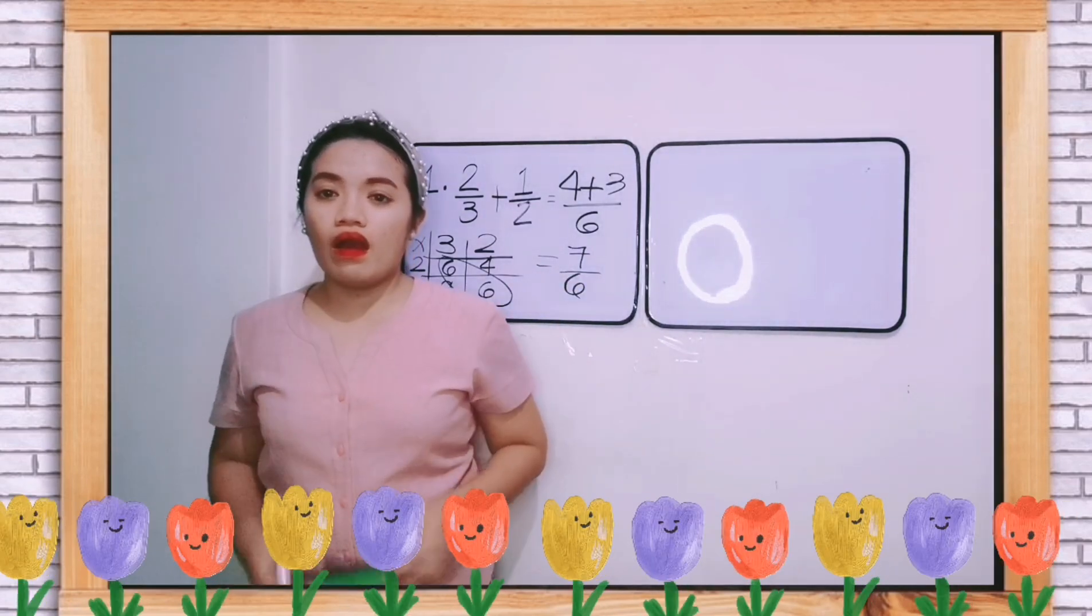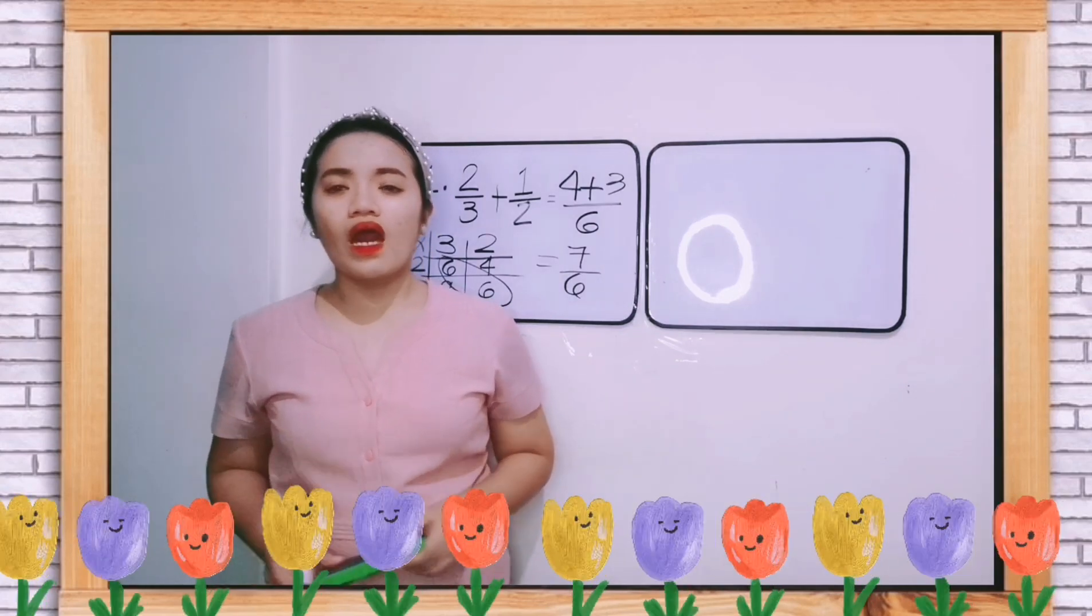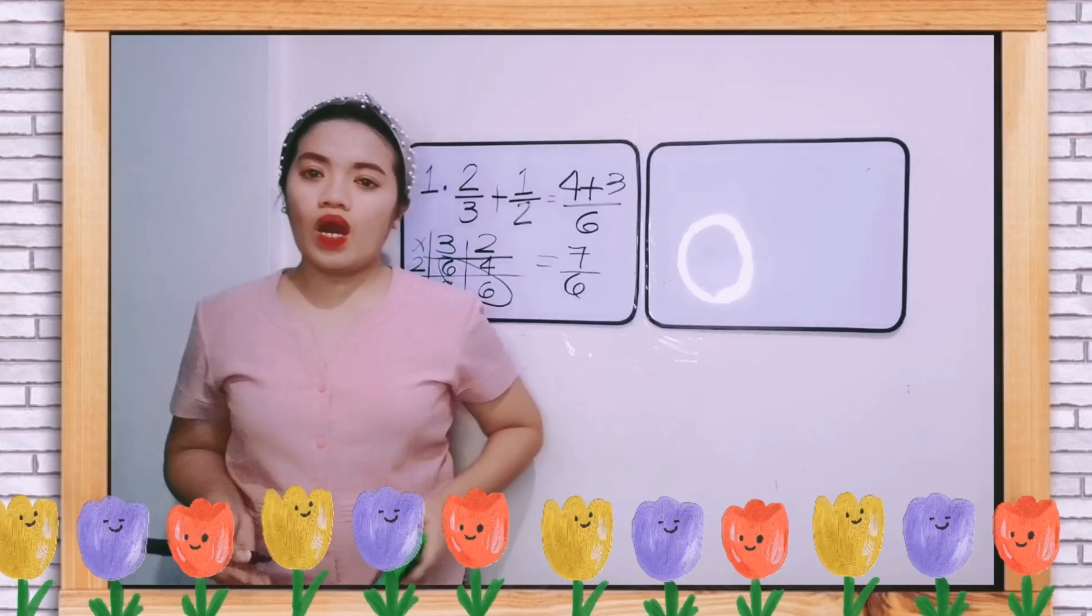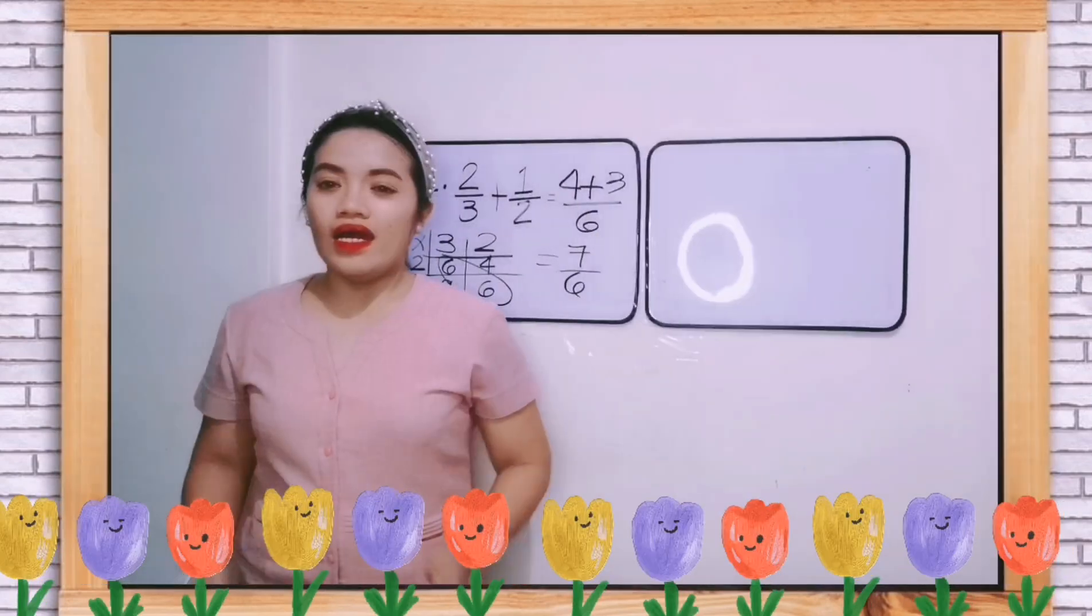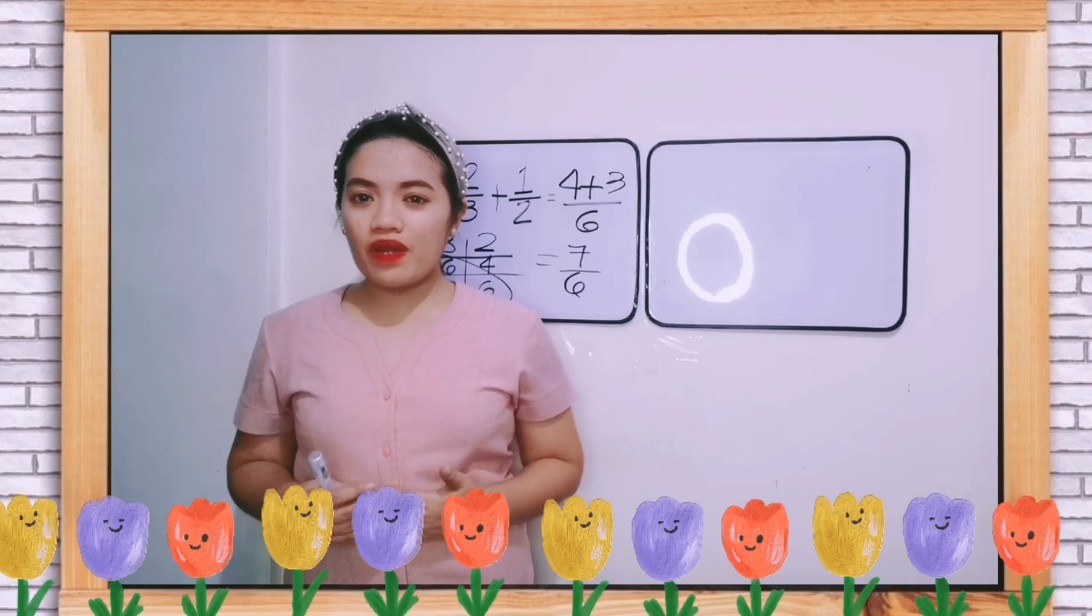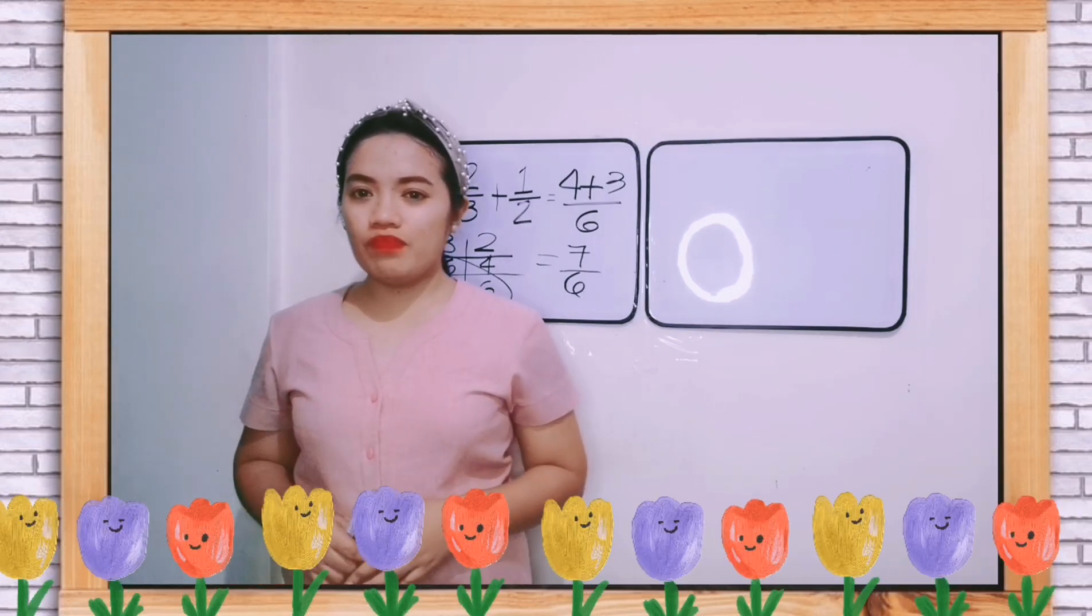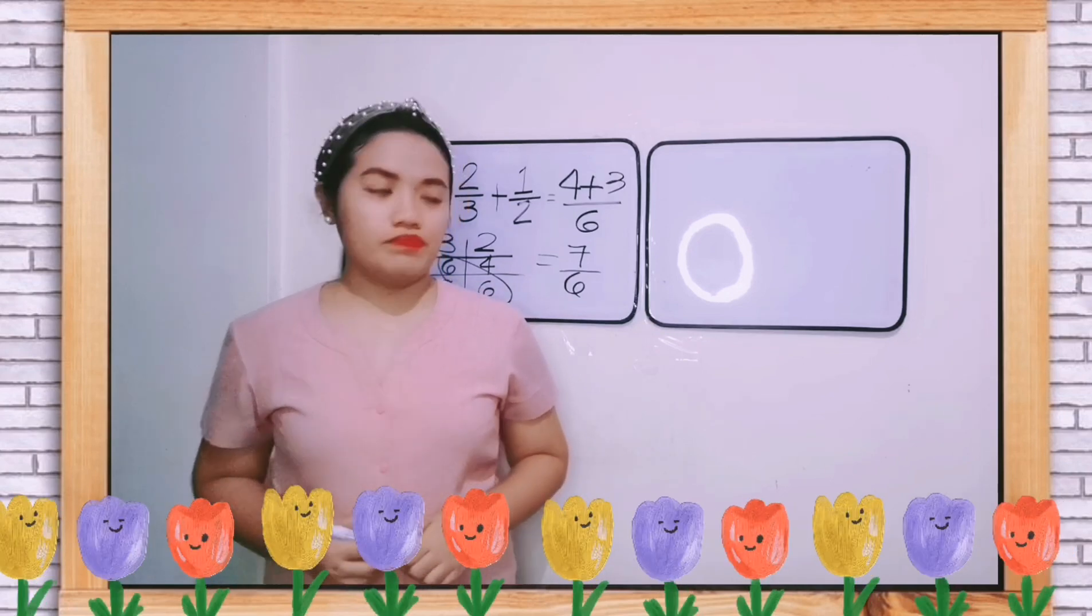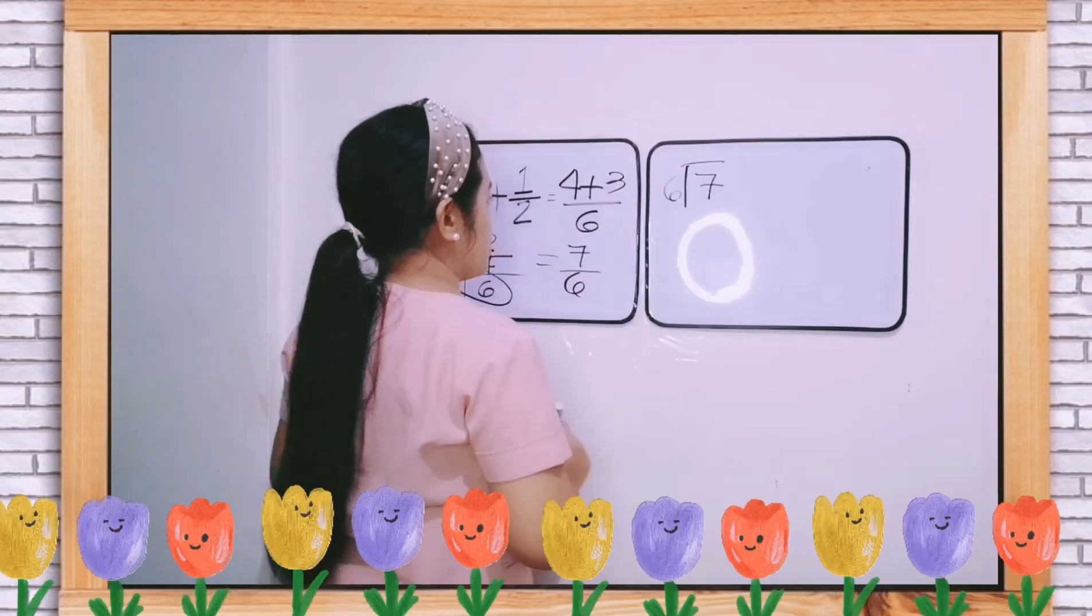As you can see, our answer is an improper fraction. So what are we going to do with a fraction which is improper? To transform an improper fraction into a mixed number, just divide the numerator by the denominator.